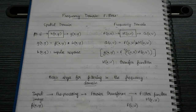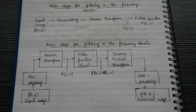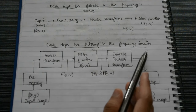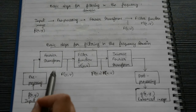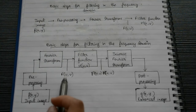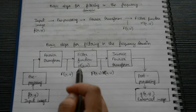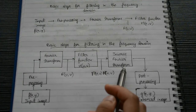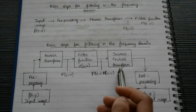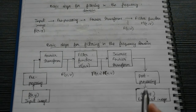To summarize the basic steps for filtering in the frequency domain: first we have the input image, on which some pre-processing is done, then Fourier transform is applied to convert it into the frequency domain. Then the filter function H(u, v) is convolved with the Fourier transform of the input image, and finally it is converted back into the spatial domain with inverse Fourier transform and post-processing to get the enhanced image.